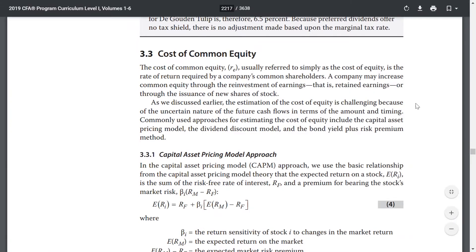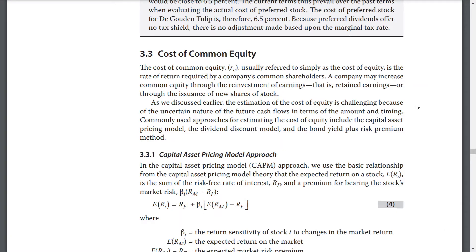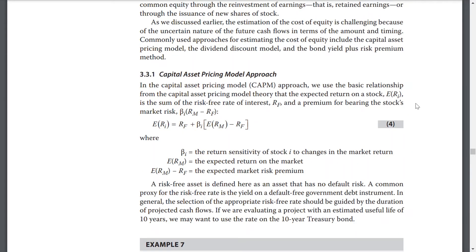The cost of common equity, usually referred to simply as the cost of equity, is the rate of return required by a company's common shareholders. A company may increase common equity through the reinvestment of earnings — that is, retained earnings — or through the issuance of new shares of stock. The estimation of cost of equity is challenging because of the uncertain nature of the future. Capital asset pricing model approach, the CAPM approach, is based on the relationship from capital asset pricing model theory that the expected return on a stock is the sum of the risk-free rate of return and the premium for bearing the stock's market risk.